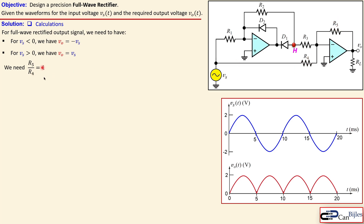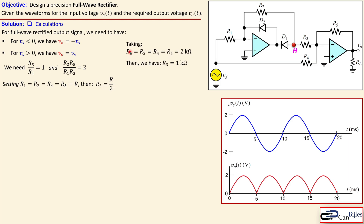Again we make it easy by setting all four resistors — R1, R2, R4, R5 — equal to R, and R3 equal to R over 2, as discussed before. Taking R = 2 kΩ for all four resistors, R3 then equals 1 kΩ. So all resistors are 2 kΩ except R3 which is 1 kΩ. Many other options are possible.